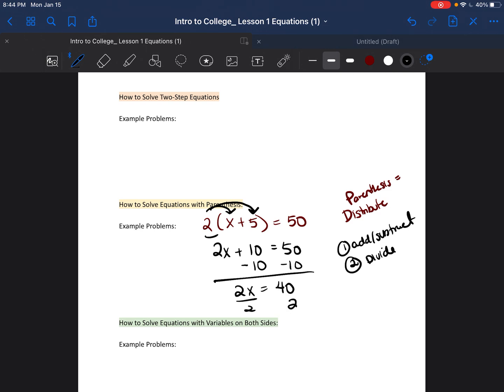And then we're going to divide both sides by 2. Because right now, the 2 is being multiplied by the x. To get rid of it, we do the opposite of multiplication, which is division. So we're left with x is equal to 20.